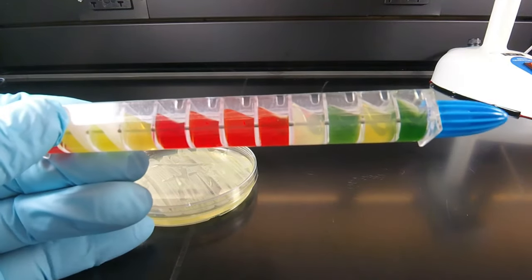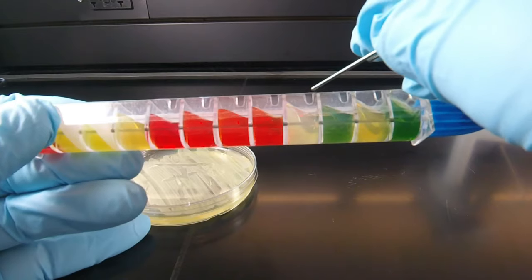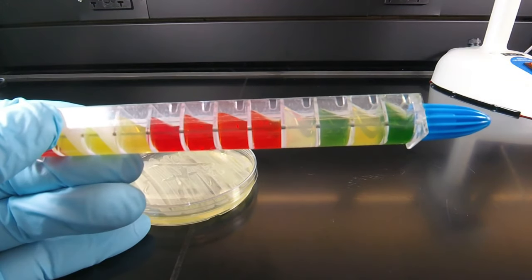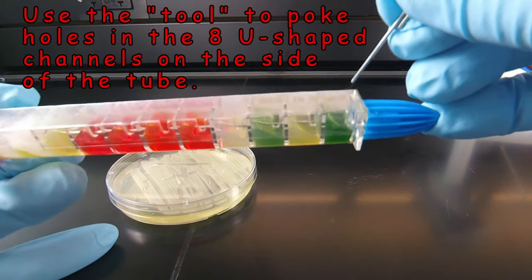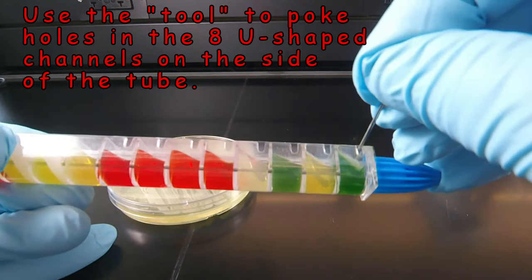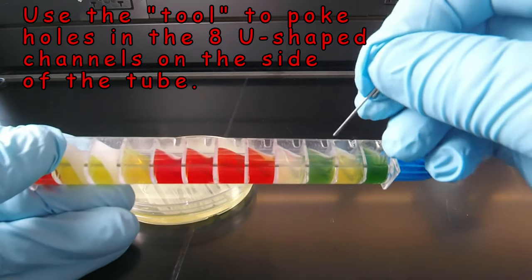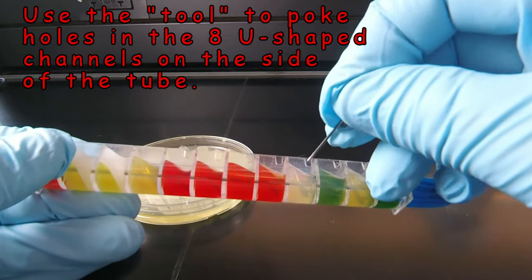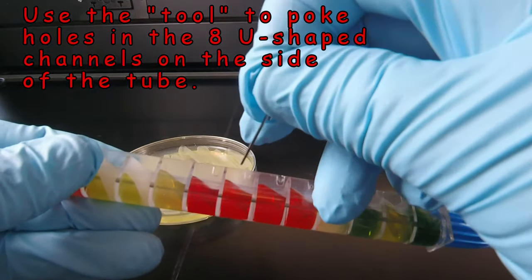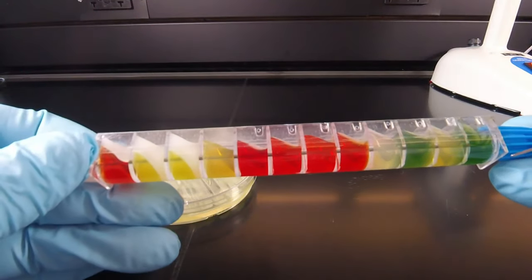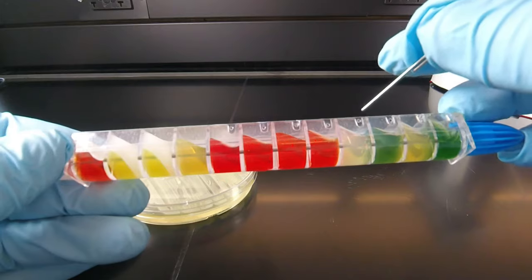When we're holding it in this position, in the first eight wells you see these little U-shaped indentations on the side of the tube. We're going to take the tool that we broke off from the previous step, and on the side of the tube, not the top, poke right through that U. That will allow oxygen into the first eight wells for aerobic reactions. The last wells are not poked, there is no U there, and that will allow for anaerobic reactions.